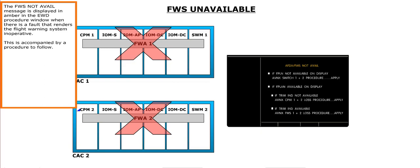The FWS not available message is displayed in amber in the EWD procedure window when there is a fault that renders the flight warning system inoperative. This is accompanied by a procedure to follow.